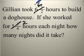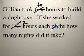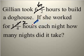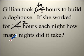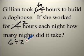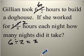So now it took her six hours, and she worked two hours each night. How many nights did it take? Six hours, two hours each night — most of you will be able to see that we're going to take six and divide it by two to get our answer of three. It would take her three nights to do this.